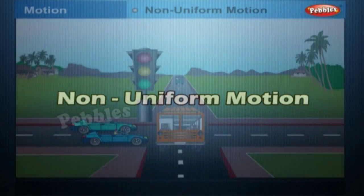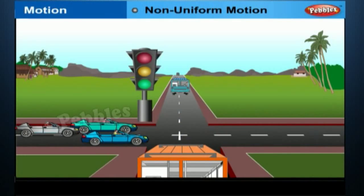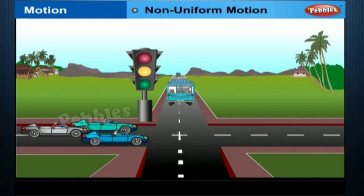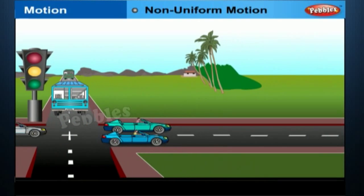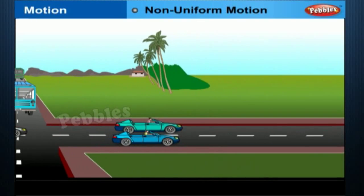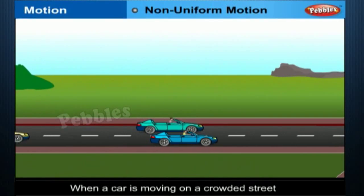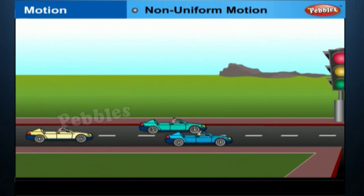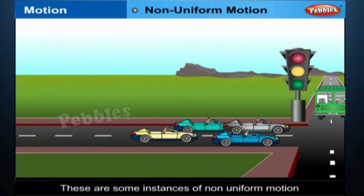Non-Uniform Motion. In our day-to-day life, we come across motions where objects cover unequal distances in equal intervals of time. For example, when a car is moving on a crowded street or a person is jogging in a park. These are some instances of non-uniform motion.